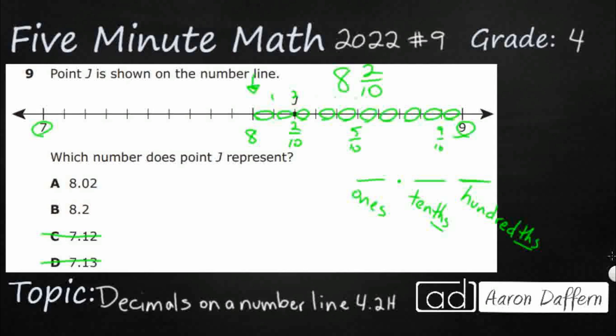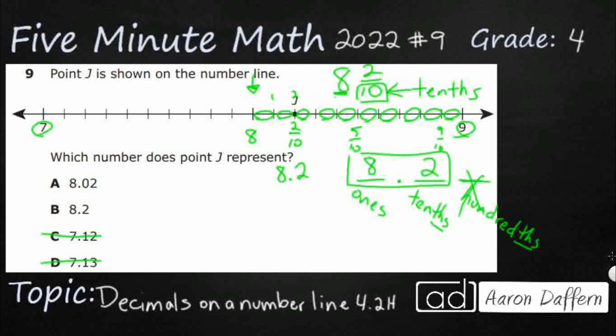One of the big learnings in fourth grade is how to relate decimals and fractions. So the 8 is in the 1s place, and this 2 is in the tenths place — I've got 2 tenths. I don't need my hundredths right now, so I can just leave that blank. So this is 8.2, or 8 and 2 tenths, which is exactly the same thing as the mixed number 8 and 2 over 10. My answer here is going to be B.